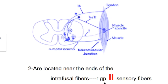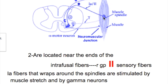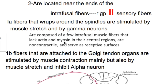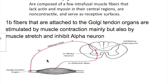The 1a fibers are myelinated and highly sensitive to stimuli and fast conducting. Near the ends of the intrafusal fibers are group 2 sensory fibers. Group 1 fibers wrap around the spindles; they are stimulated by muscle stretch and by gamma neurons. The center lacks actin and myosin, so it doesn't contract — only the ends contract. The 1b fibers arise from the Golgi tendon organs and are stimulated mainly by muscle contraction and also by muscle stretch. They inhibit the alpha motor neuron through an interneuron — the inhibitory interneuron inhibits the alpha motor neuron so the contraction stops.